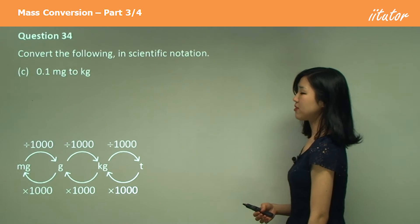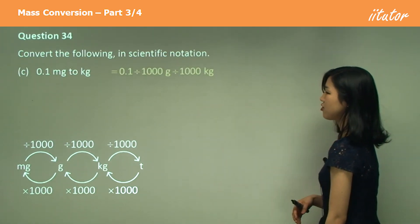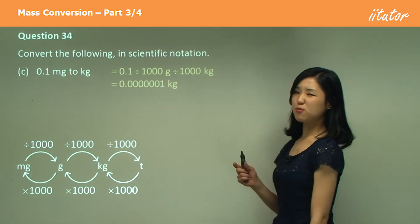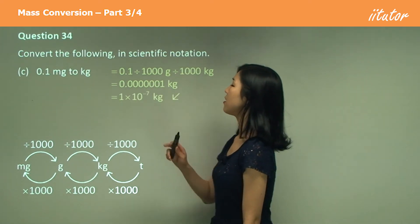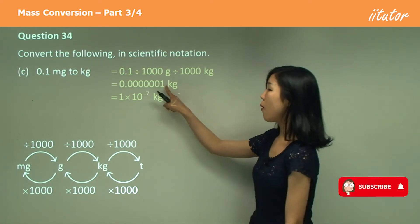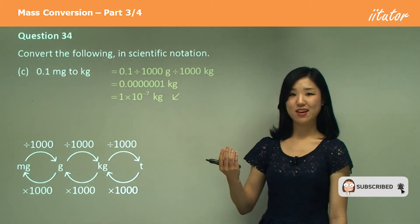Again, milligrams to kilograms, divide by a thousand two times. And you're going to get a really small decimal again. Count them up. One, two, three, four, five, six, seven. So negative seven. One times ten to the power of negative seven.